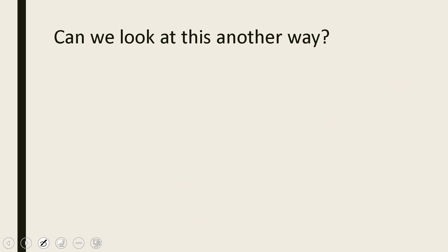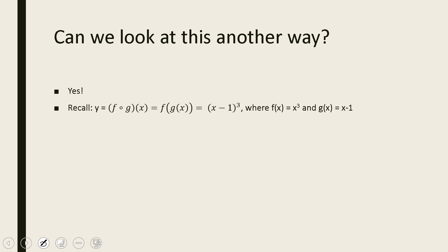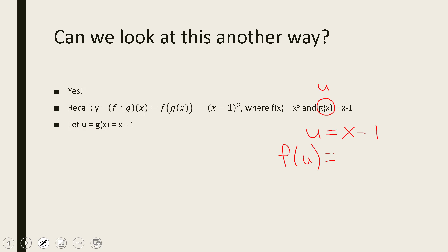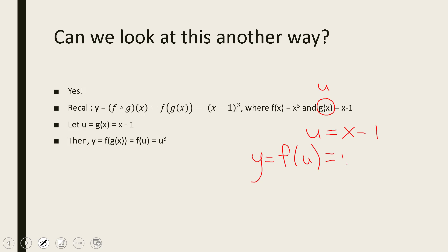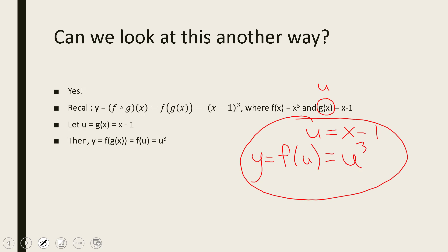We can look at this another way without using f(x) and g(x) notation — we can use the symbol u instead. If we let u equal g(x), then u equals x minus 1. Instead of writing f(g(x)), we write f(u), and y equals f(u) equals u cubed. This is a simpler way to decompose the function without needing extra symbols.